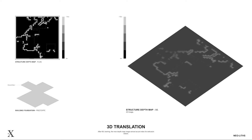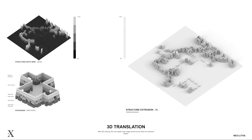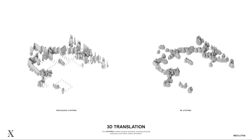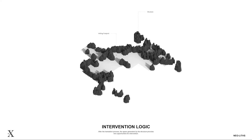After training, the new depth map image serves as an index for extrusion values. We followed a similar stepping process as before. This condition became intensified, providing spatial and structural redundancy. We utilized the space created by this new structure to intervene with secondary enclosures that provide the skin and space of the building.